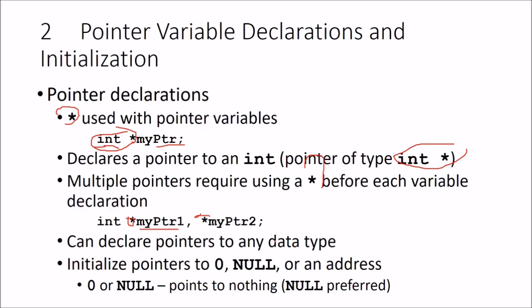You can declare pointers of any data type — integer, double — and you can also have a void pointer. To initialize pointers, use 0, NULL, or an address. NULL is preferred. Pointing to nothing — same as a simple variable when you assign 0 meaning it has no value. Similarly, if a pointer variable is not keeping any address, you tell the compiler it is null, meaning it is not holding any address right now.